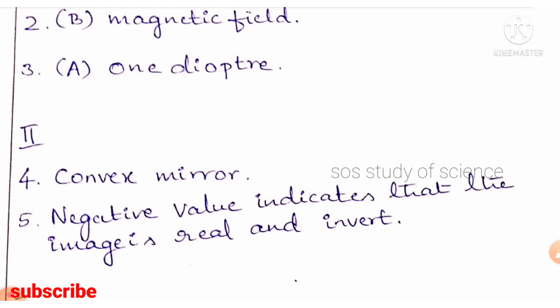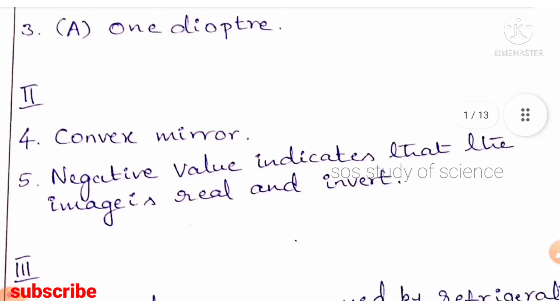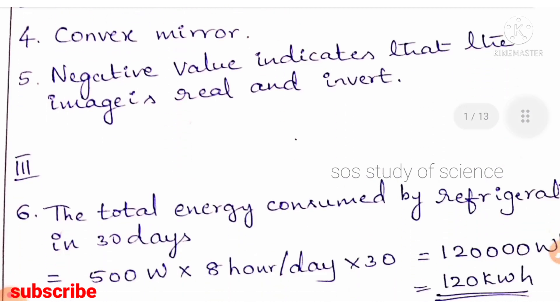Fourth MCQ: which mirror is used as a rear-view mirror in vehicles? It is a convex mirror. Fifth: the nature of the image when the magnification formed by a spherical mirror has a negative value — a negative magnification indicates that the image is real and inverted.